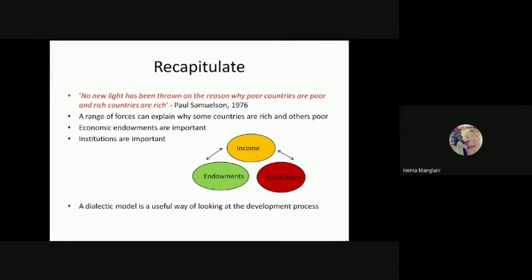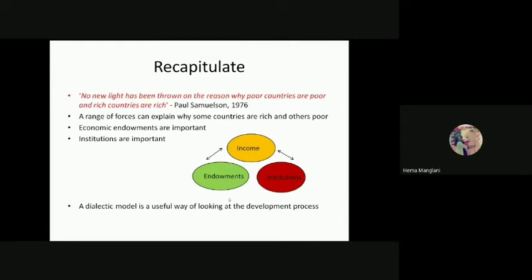A range of forces can explain why some countries are rich and others poor. Economic endowments are important. The institutions they were talking about comprise how you would generate this initial income. So it is based on the institutions — these are different schools of thought in the economy — and also based on endowments, that is the initial capital. A dialectic model is a useful way of looking at the development process.